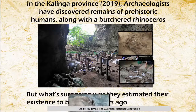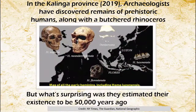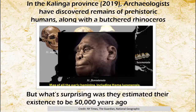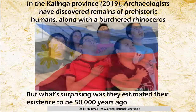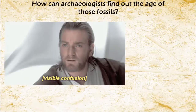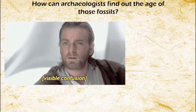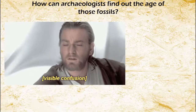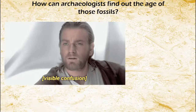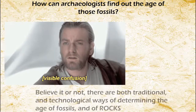These are the fossils that they have found, and you can compare Homo luzonensis to Neanderthals and Homo sapiens. This is the image of Homo luzonensis, and it can be surely proud that our archaeologists can help in discovering the mystery of our origins. But how can archaeologists find out the age of these fossils? How did they come to the conclusion that it's 50,000 years ago?